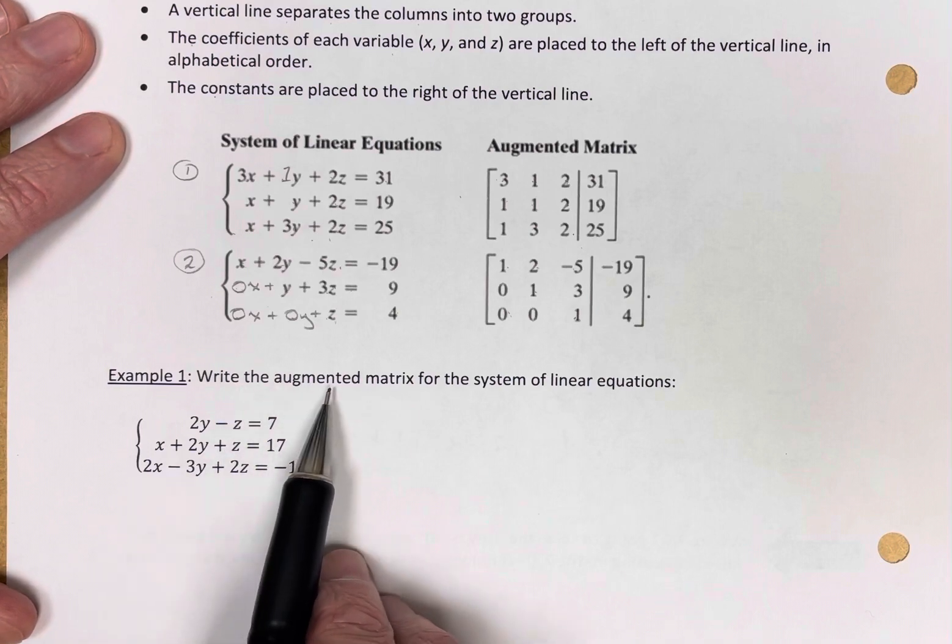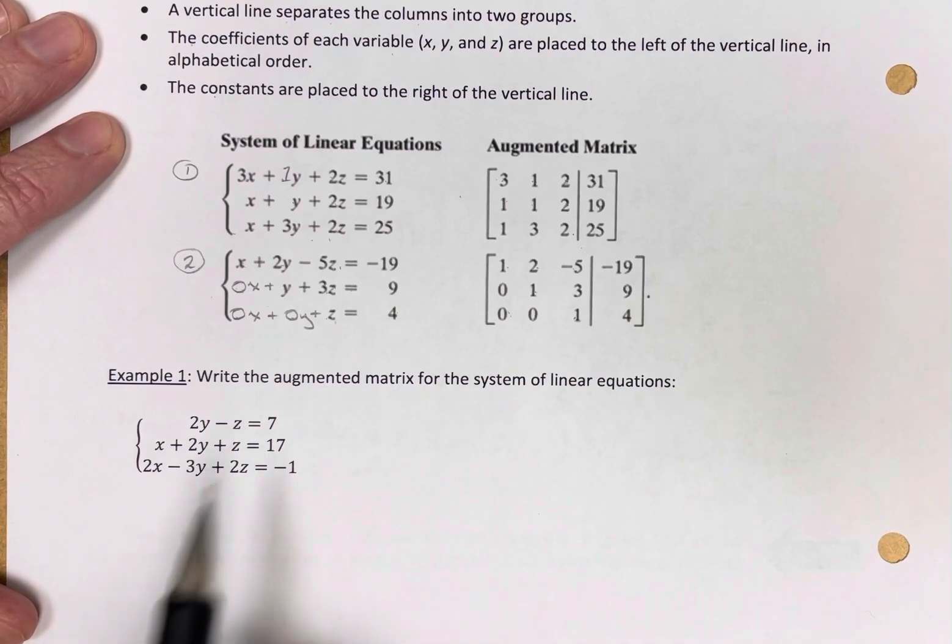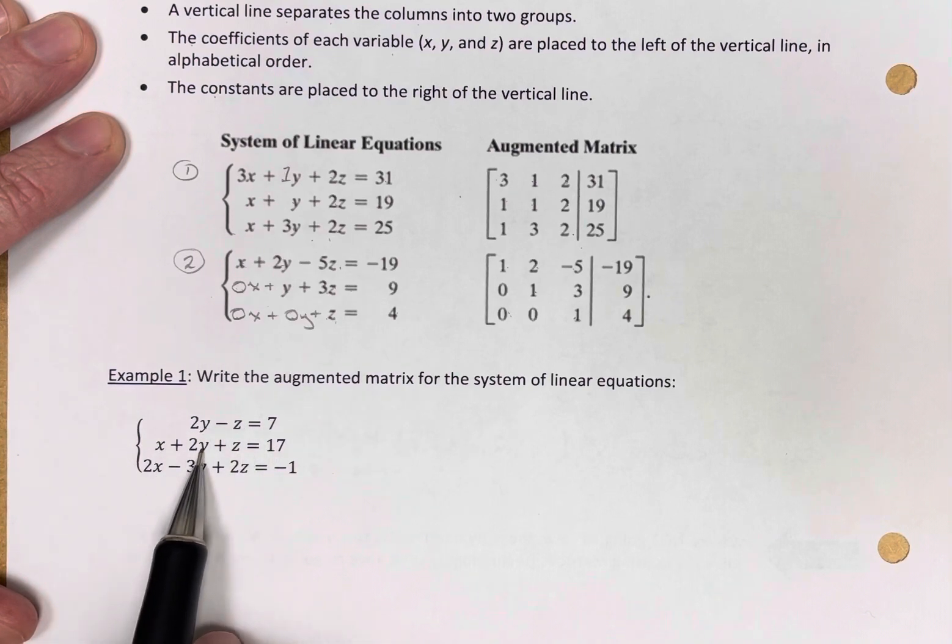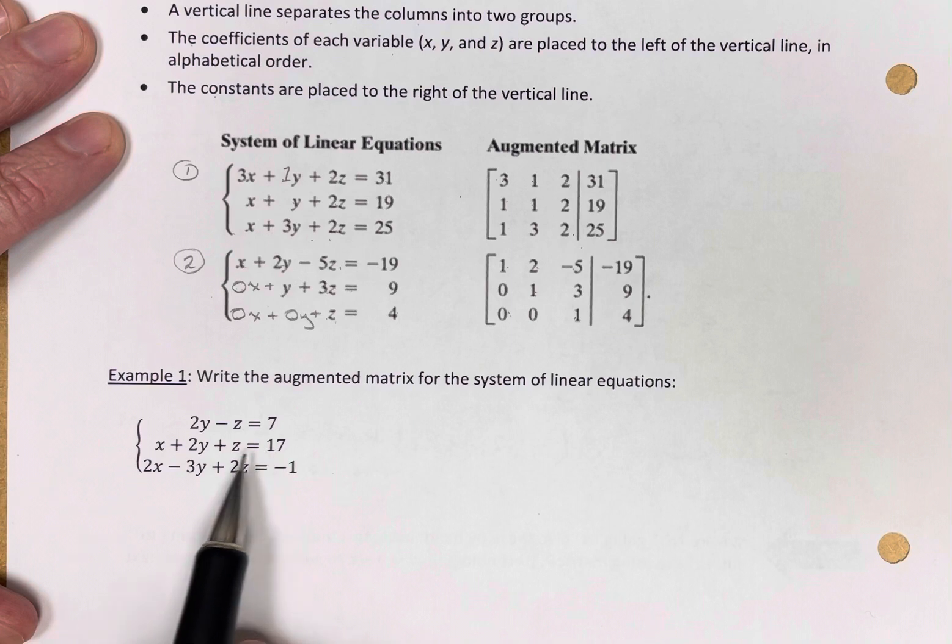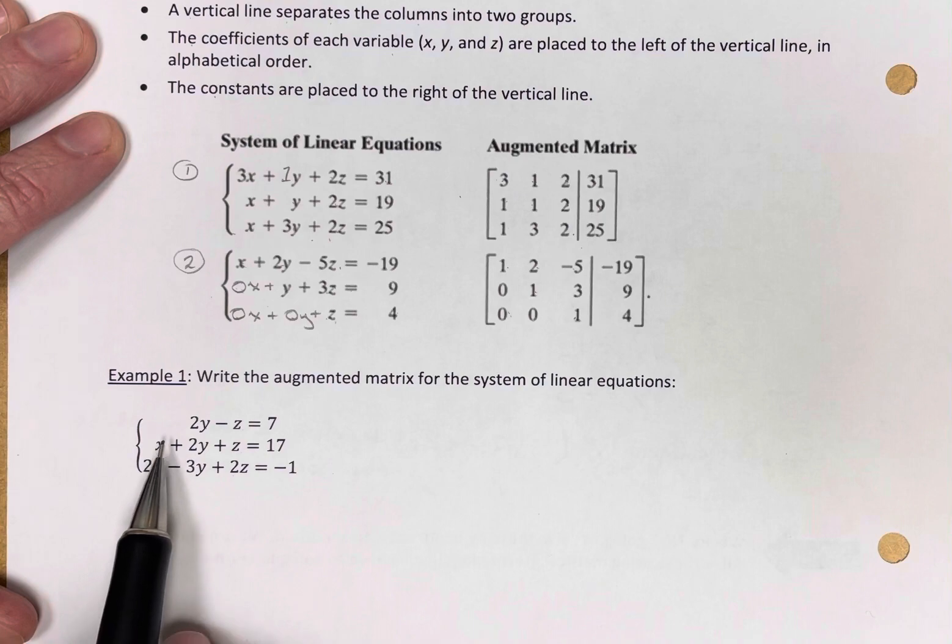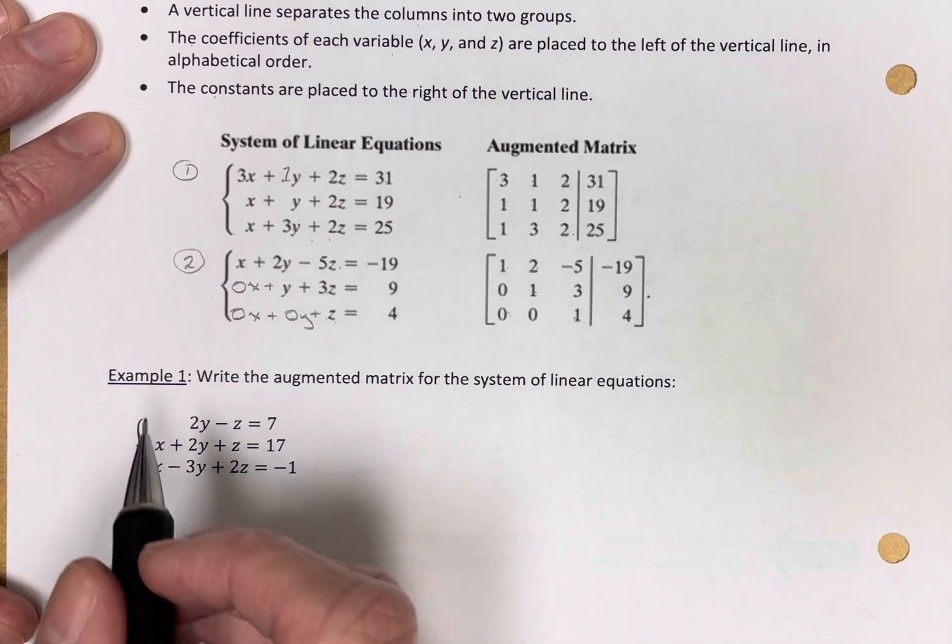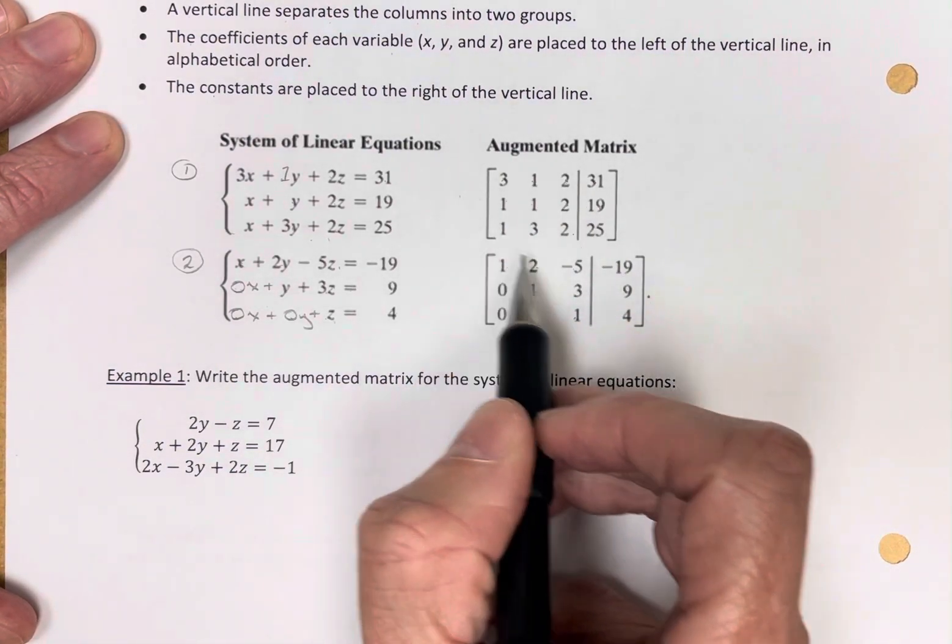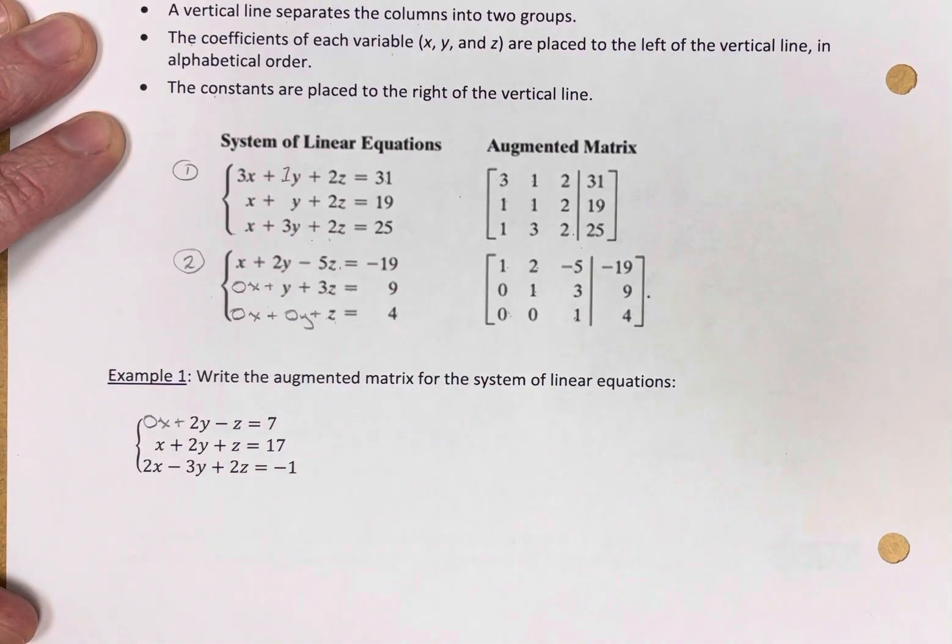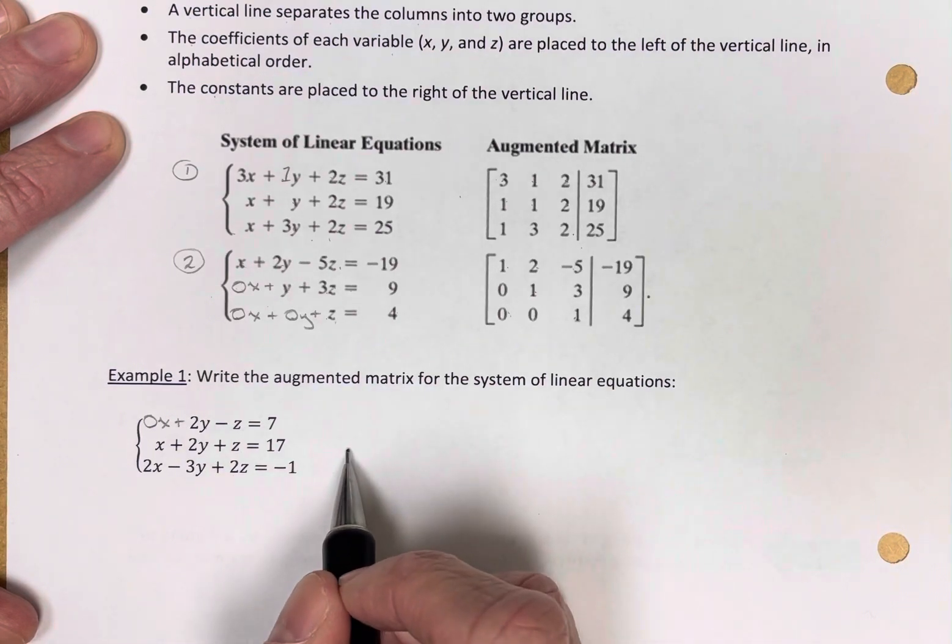Example one, write the augmented matrix for this system of linear equations. I have 2y minus z equals 7, x plus 2y plus z equals 17, 2x minus 3y plus 2z equals negative one. First things first, for any variable you don't have, we're going to put a zero in for it because we need to fill out the entire augmented matrix.